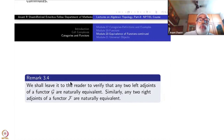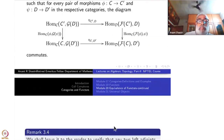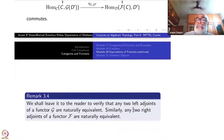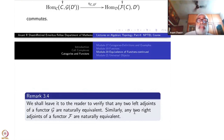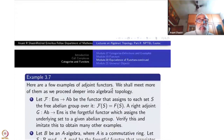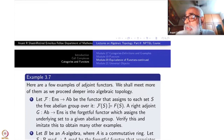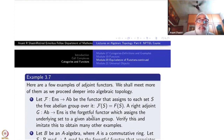Whenever you have a natural transformation: two left adjoints for the same function will be naturally equivalent, and two right adjoints to the same function will be naturally equivalent. Try to prove that. What you have to do is at least think about it, and then it will be easier for me to explain.